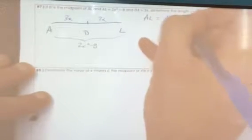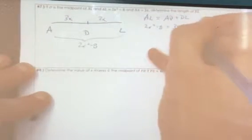So we could say AL equals AD plus DL. This is 2x squared minus 8 equals 3x plus 3x equals 6x.